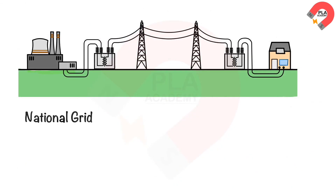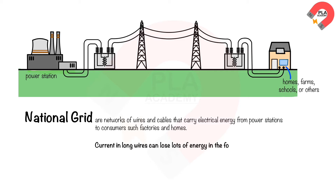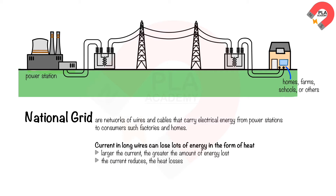The National Grid is a network of wires and cables that carries electrical energy from power stations to consumers such as factories and homes. However, currents in long wires can lose lots of energy in the form of heat. The larger the current, the greater the amount of energy lost. If the current in the wires is kept to a minimum, the heat losses can be reduced. Transformers help us do this.